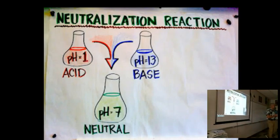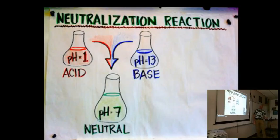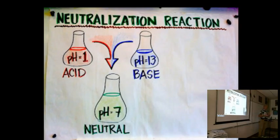We're talking today about neutralization reactions — what happens when you mix an acid and a base. The general concept is captured by this illustration: if you have an acid that has a low pH and a base that has a high pH, you mix them together and the pH is neutralized; they wind up somewhere near the middle.